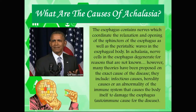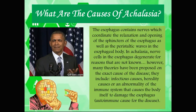So what are the causes of achalasia? The esophagus contains nerves which coordinate the relaxation and opening of the sphincters as well as the peristaltic waves in the esophageal body. In achalasia, nerve cells in the esophagus degenerate for reasons that are not known. Many theories have been proposed, including infectious causes, hereditary causes, or an autoimmune abnormality where the body itself damages the esophagus. The exact cause remains unknown.